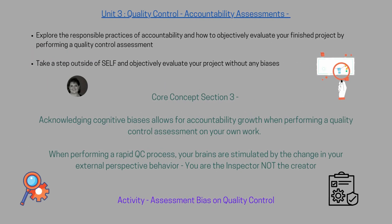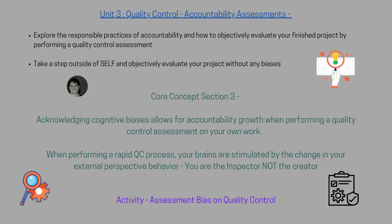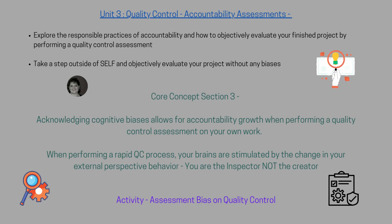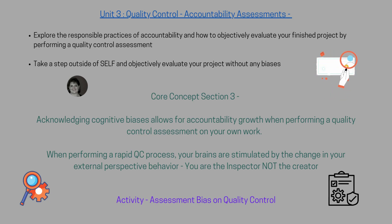Unit 3, Quality Control and Accountability Assessments. In Unit 3, you will explore the responsible practices of accountability and how to objectively evaluate your finished product by performing a quality control assessment. As we drive our project's rapid process towards completion, our brains shift gears once again to embrace the critical decision-making behavior we are about to perform. Your quality control hat is on, and that provides you with the opportunity to look at the project from an external perspective as the observer and the inspector, not the creator. This change in behavior allows for constructive feedback, which transforms your project's improvement for your finalization. Exploring the resources on cognitive bias and critical reflecting by taking steps outside of self, you objectively look at your performance and your design thinking.